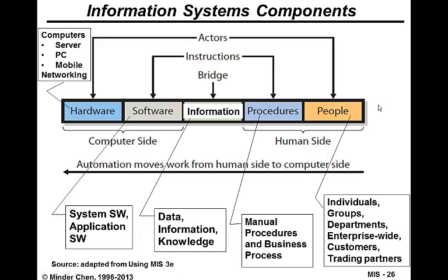Let's look at information systems by breaking them down into various components. There's hardware and software which help us generate information, and through some many-step procedures, people will be able to use the information to make better decisions. We should consider people as part of the information system. Procedures and software are instructions to tell people what to do, and software tells the hardware what to do.